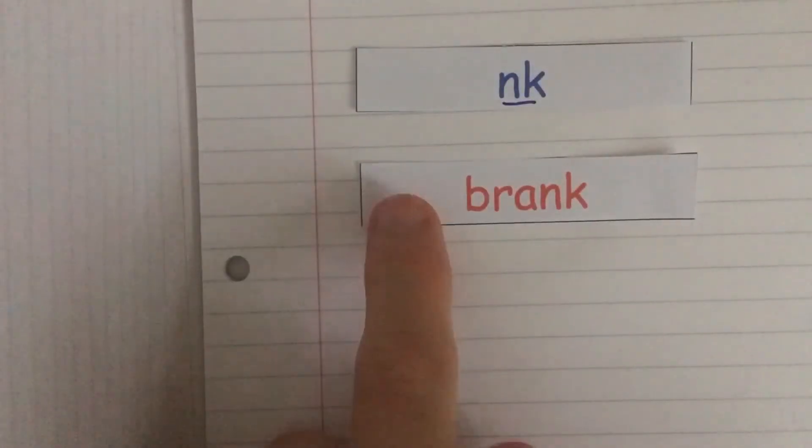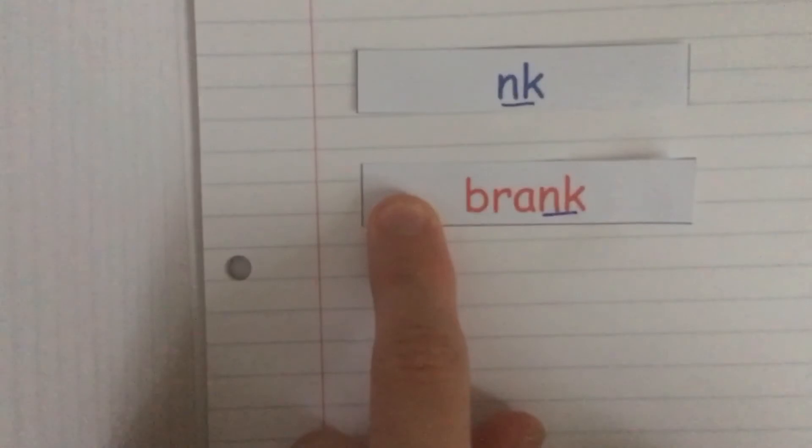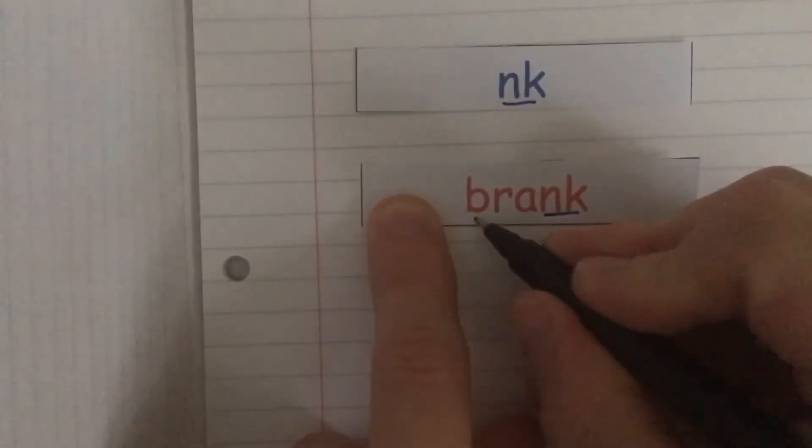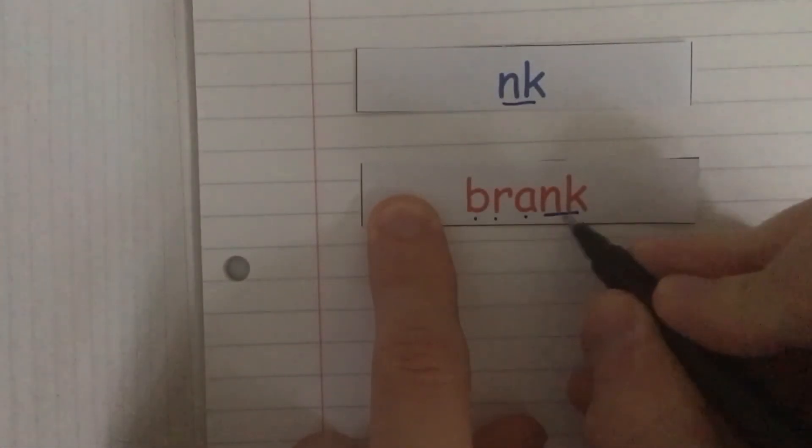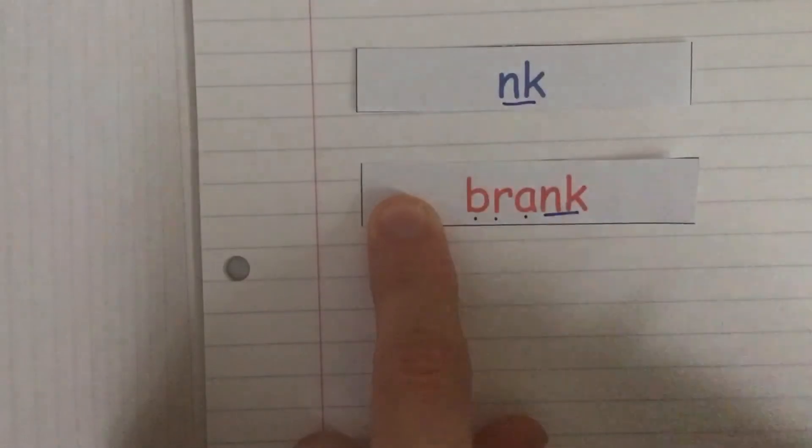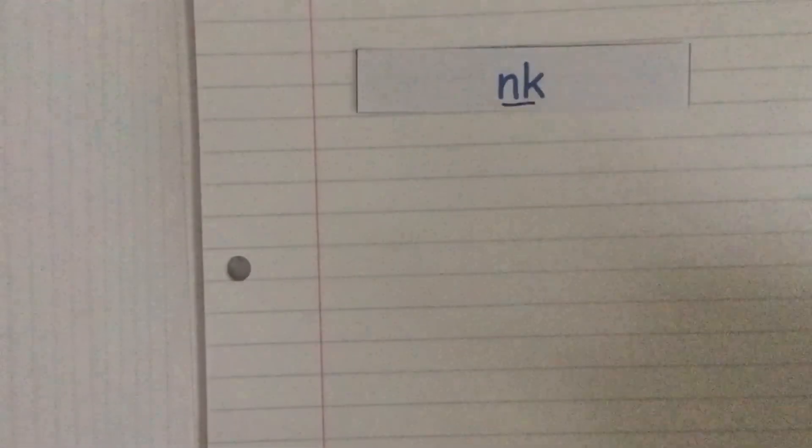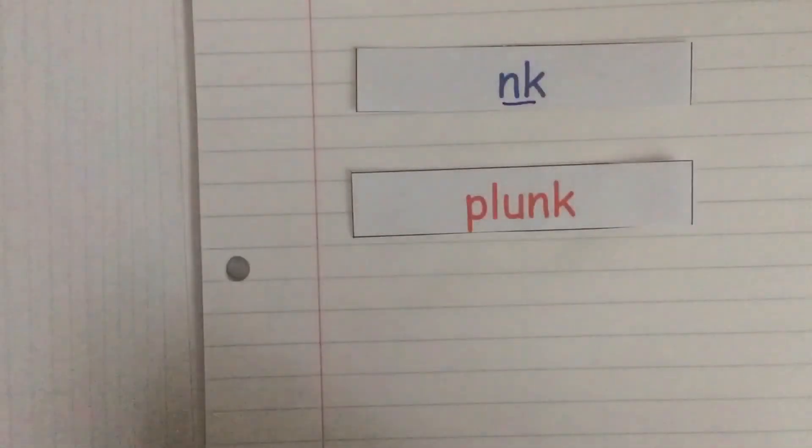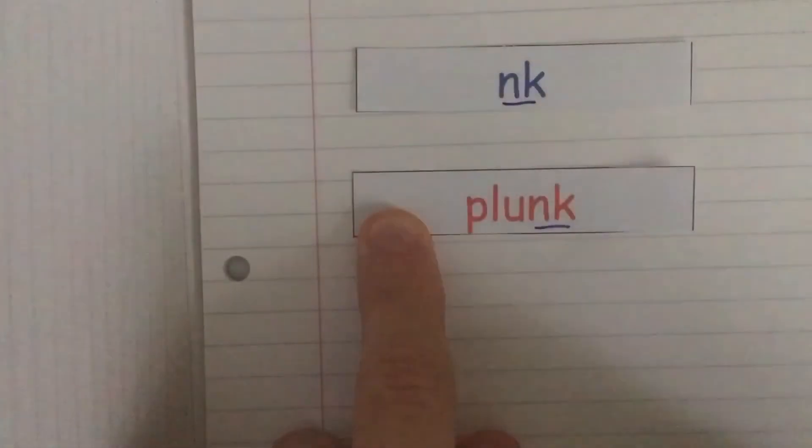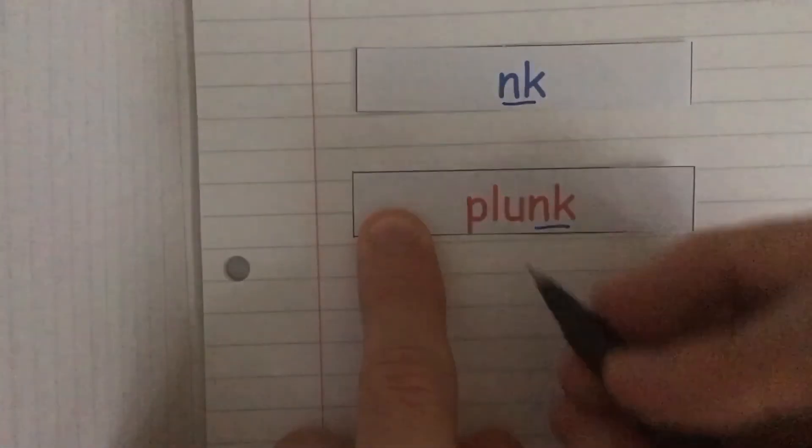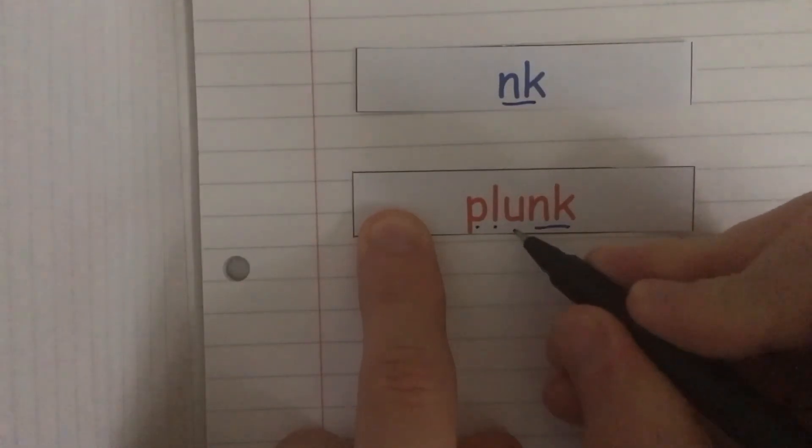Special friends nk. Fred talk: b-r-a-nk. Brank. Special friends nk. Fred talk: p-l-a-nk. Plunk.